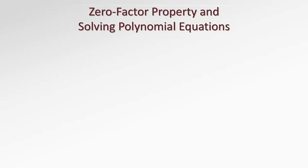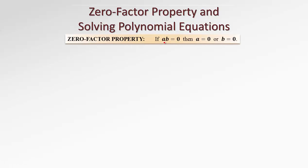In this lesson, we'll talk about the zero-factor property and its application in solving polynomial equations. This property states that if we multiply two quantities and the product is zero, then either the first quantity or the second quantity is zero. For the first time in this course, we may try to prove this property.